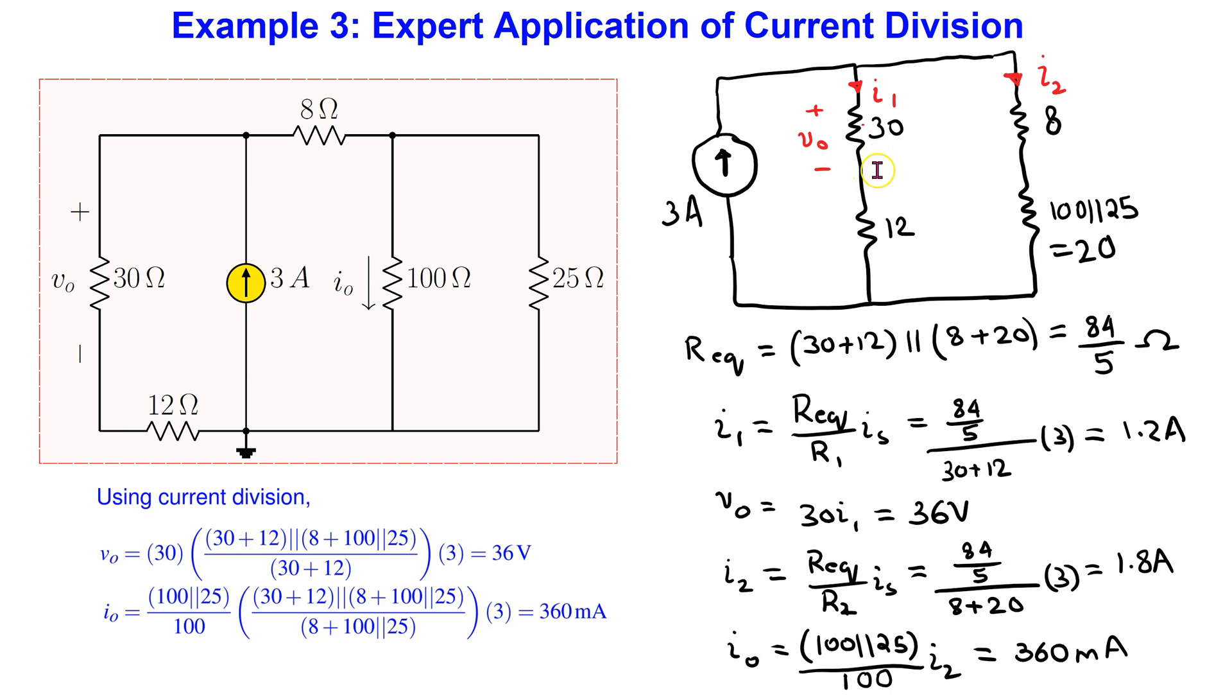Then using Ohm's law applied to the 30 Ohm resistor, we can find V0. Finally,